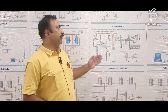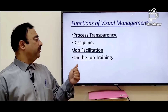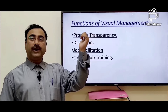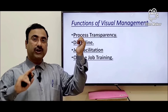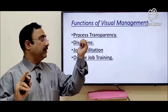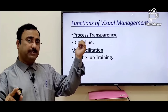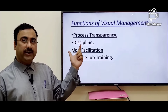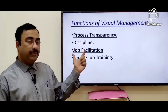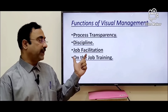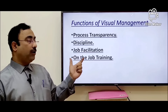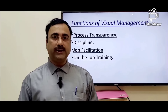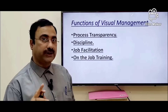So let's have a look. For visual management, there are four functions: first is to provide process transparency, second is discipline, third is job facilitation, and fourth is on-job training.